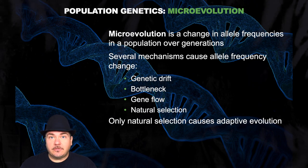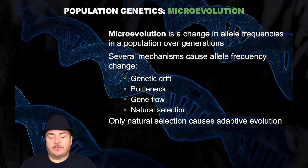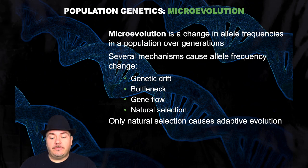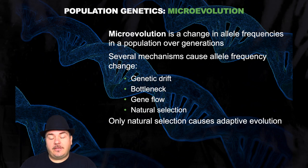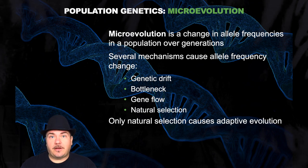Microevolution is a change in allele frequencies in a population over generations, and there are several mechanisms that can cause allele frequency changes — examples of which would be genetic drift, bottleneck, gene flow, and natural selection. We're going to discuss these in the lecture today. Of note, out of these, natural selection is the only one that actually causes adaptive evolution, making organisms better suited to their current environment.